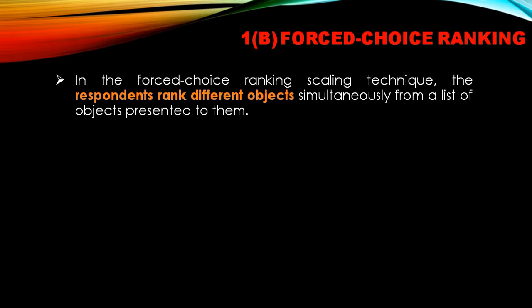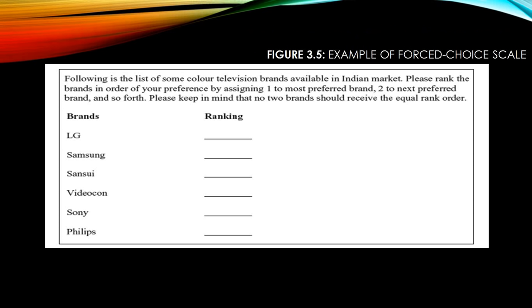In the forced choice ranking scaling technique, the respondent ranks different objects simultaneously from a list presented to them. For example: 'Following is a list of color television brands available in the Indian market. Please rank the brands in order of your preference by assigning one to the most preferred brand, two to the next preferred brand, and so forth. No two brands should receive the same rank order.' So with six brands, the respondent ranks them from one to six. This is the forced choice scale.